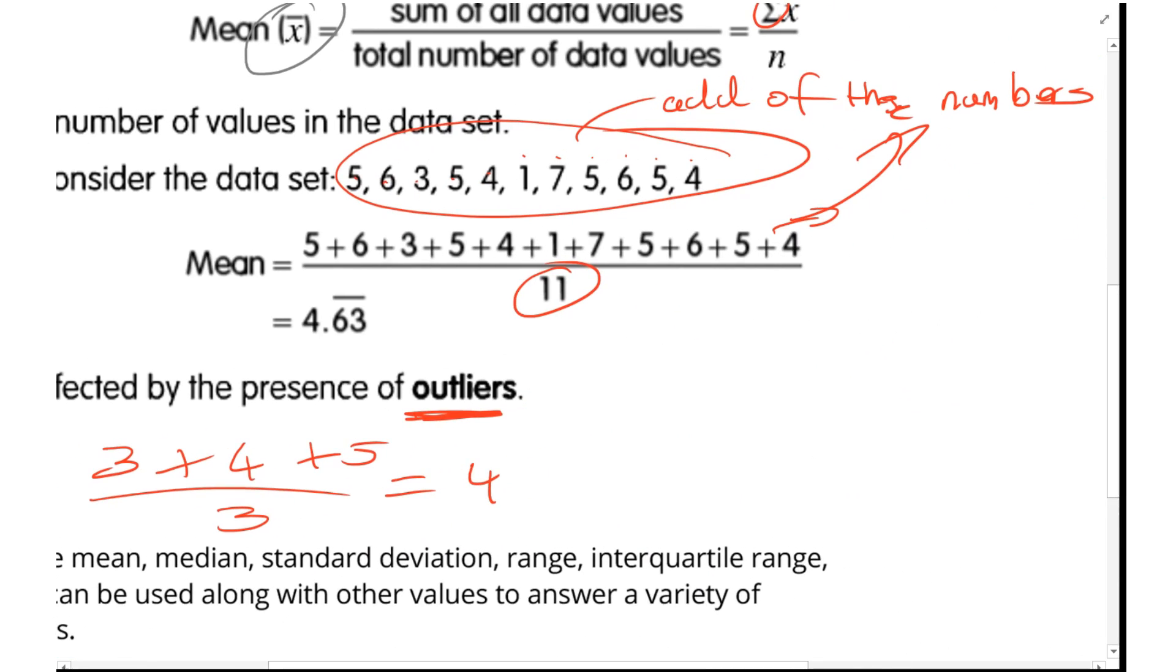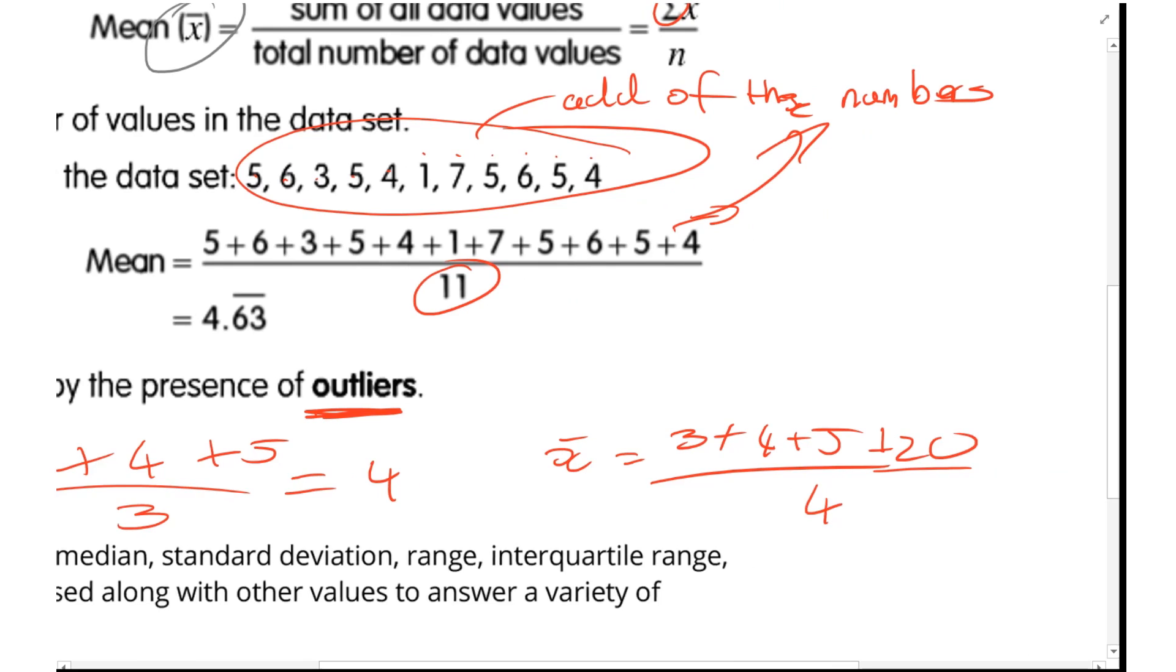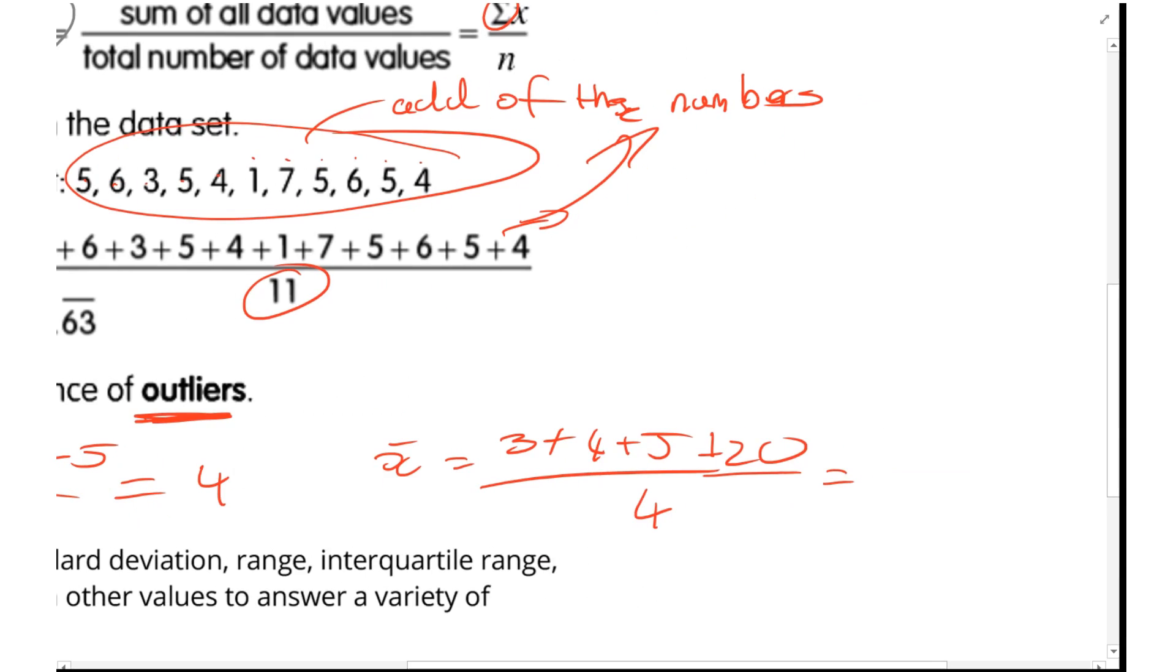I'm going to have 12 plus 20, so that's going to be 32 divided by 4. So 3 plus 4 plus 5 plus 20 equals 32 divided by 4, which is now equal to 8.